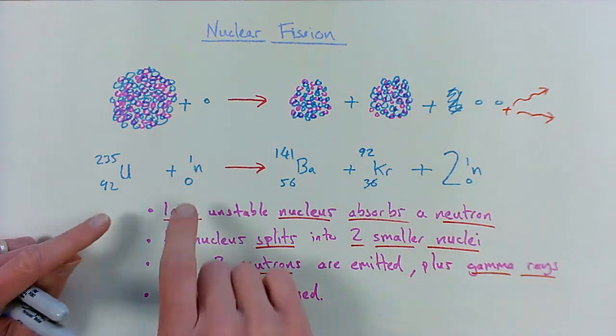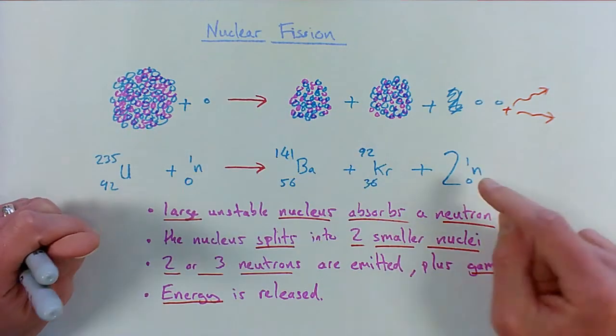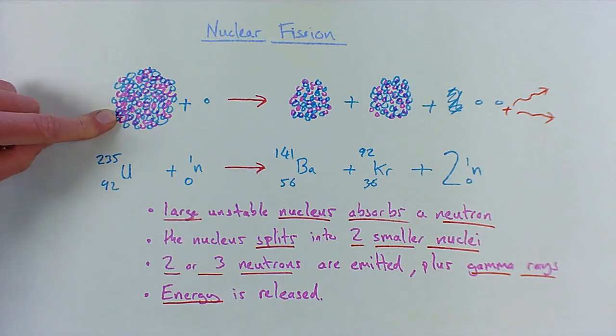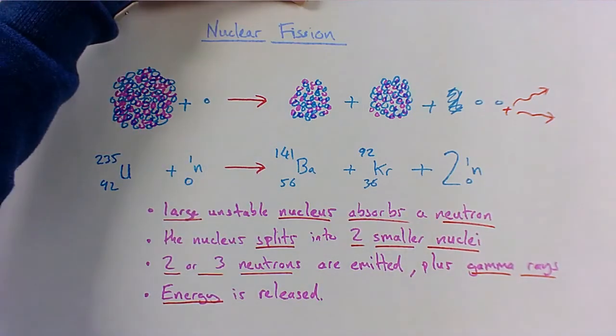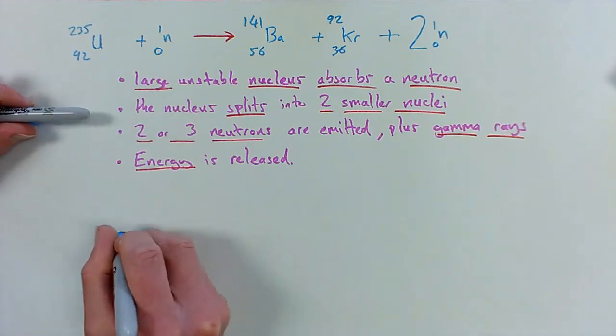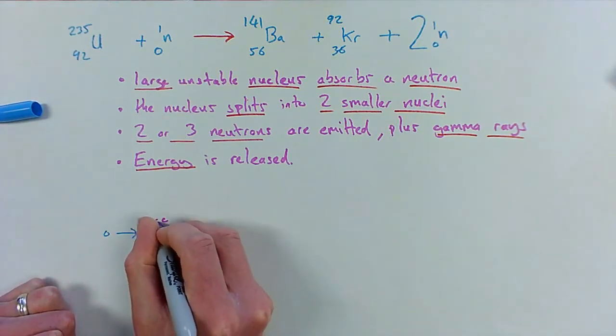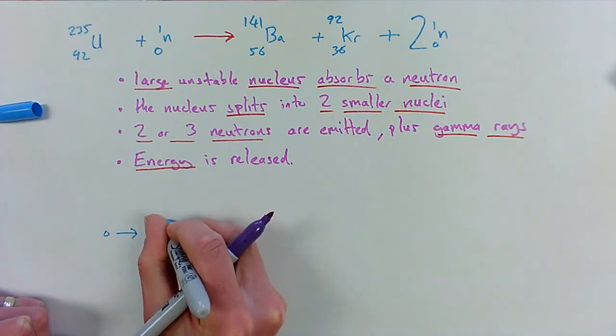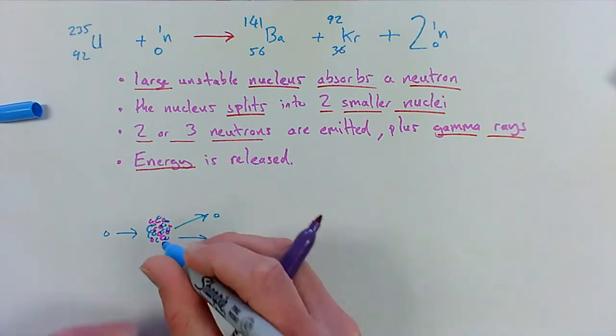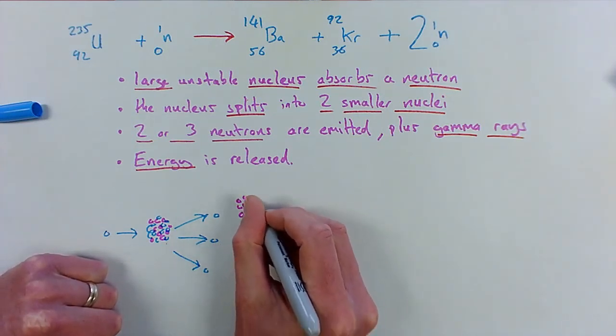Now a note we can add to this: bear in mind to start with we had one neutron that caused this one reaction to happen and energy was released. But this reaction released two or three more neutrons, so those two or three more neutrons may go on to be absorbed by another large unstable nucleus and cause more of these nuclear fission reactions to go on. What we can end up with is a chain reaction. If you imagine we had one neutron to start with, joined with one large unstable nucleus, and when that split it gave off one, two, perhaps three more neutrons which may join with another large unstable nucleus.